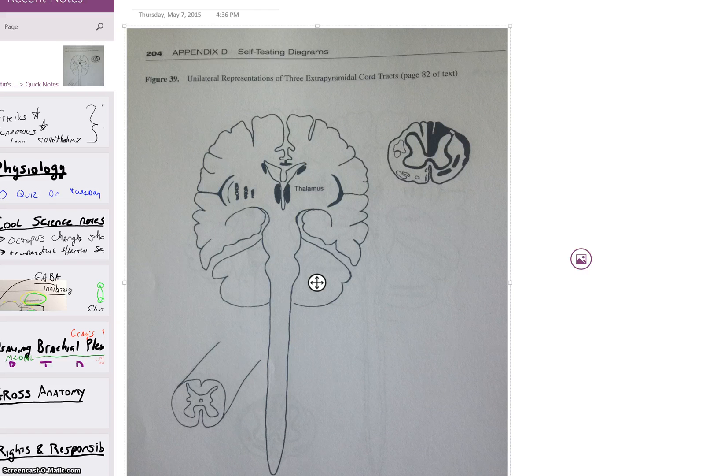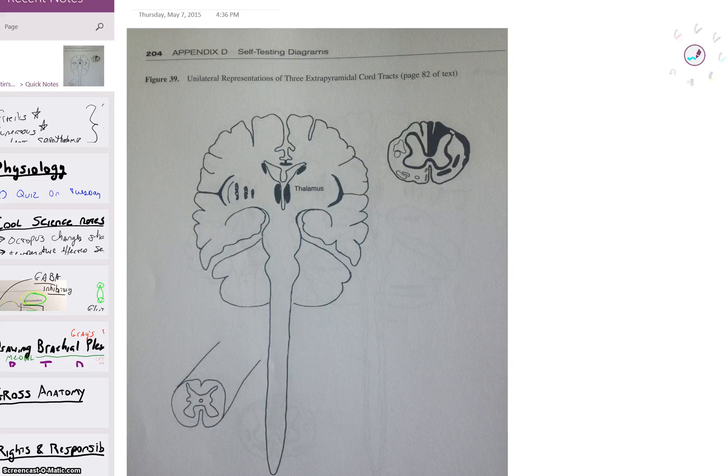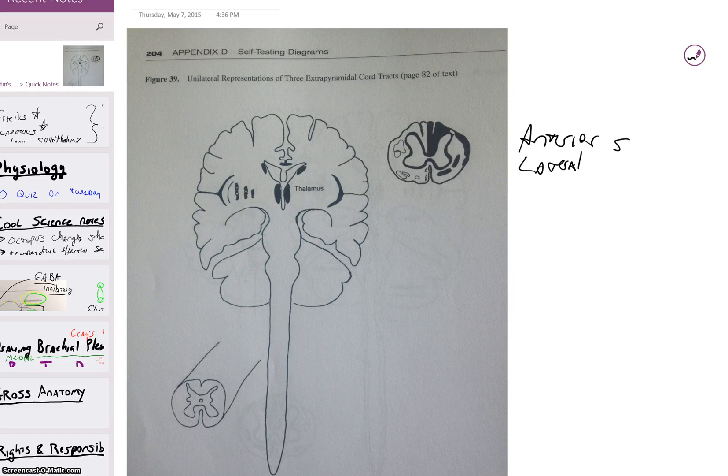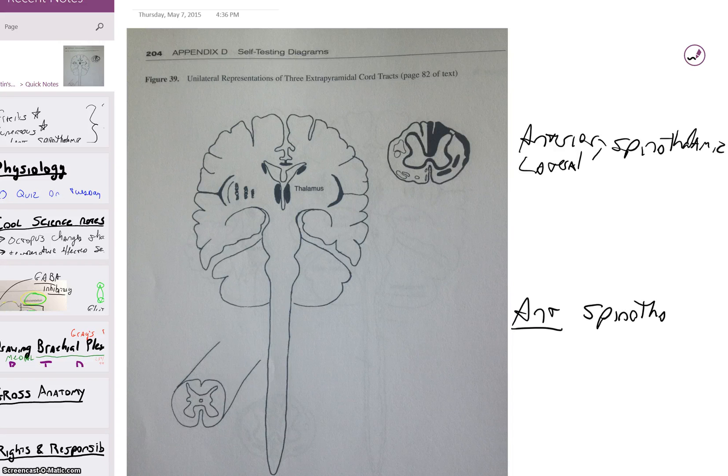One of the ways that they are similar to the gracilis and the cuneatus is that they both have three neurons in the full pathway. We're going to be dealing with the anterior and the lateral spinothalamic, not to be confused with the lateral corticospinal. We'll deal with how to differentiate when we talk more about that one. First off, the anterior spinothalamic.